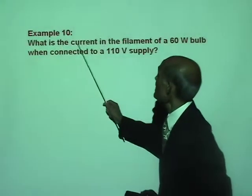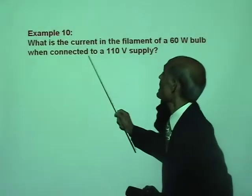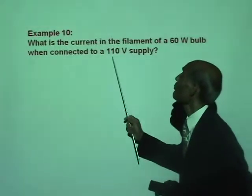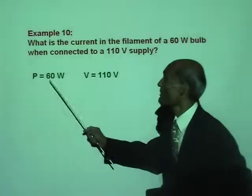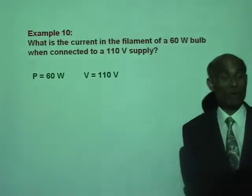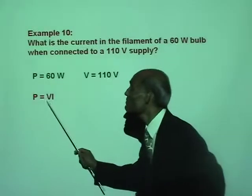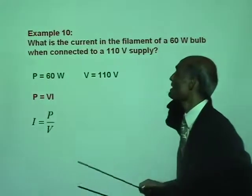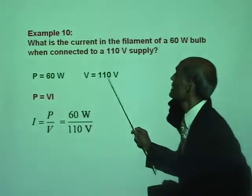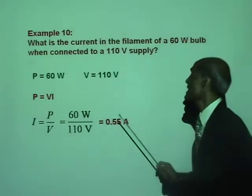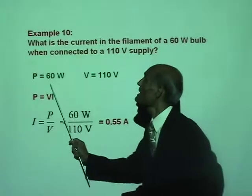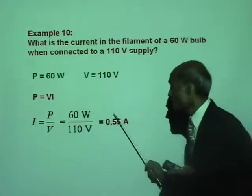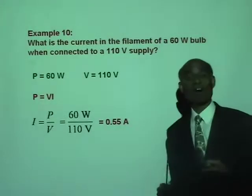What is the current in the filament of a 60 watt bulb when connected to a 110 volt supply? Power is 60 watt, voltage is 110 volts. The equation for power is P equals V times I, so I equals P over V, which is 60 divided by 110, giving I equals 0.55 ampere. When you plug a 60 watt bulb into a 110 volt supply, the current flowing in the filament is 0.55 ampere.